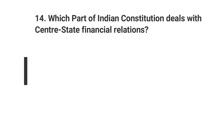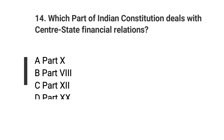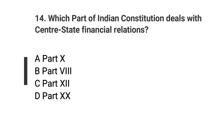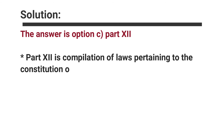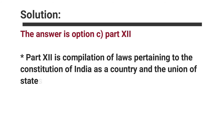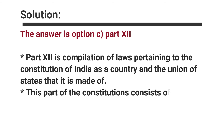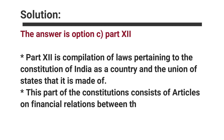Question number fourteen: Which part of the Indian Constitution deals with central-state financial relations? Options are A. Part 10, B. Part 8, C. Part 12, D. Part 20. The answer is option C, Part 12. Part 12 is a compilation of laws pertaining to the Constitution of India and the union of the states. This part of the Constitution consists of articles on financial relations between the union and the states.